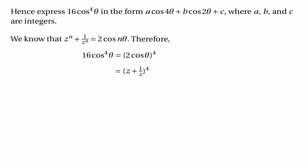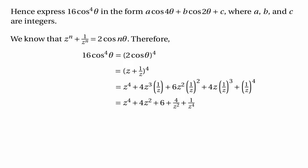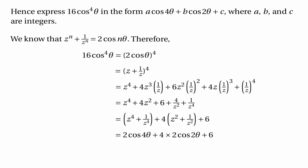Using the binomial theorem, we expand (z + 1/z)⁴ to get z⁴ plus 4z³(1/z) plus 6z²(1/z²) plus 4z(1/z³) plus (1/z)⁴, which simplifies to z⁴ plus 4z² plus 6 plus 4/z² plus 1/z⁴. Reordering the terms, this is (z⁴ + 1/z⁴) plus 4(z² + 1/z²) plus 6. Now z⁴ + 1/z⁴ is 2 cos 4θ, and z² + 1/z² is 2 cos 2θ, according to the result from before.